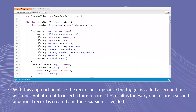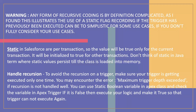After we check that recursive equals false, with this approach in place, the recursion stops once the trigger is called a second time and it does not attempt to insert a third record. The result is that for every one record, a second additional record is created and the recursion is avoided. It is not allowed to create another one after using the recursion check.